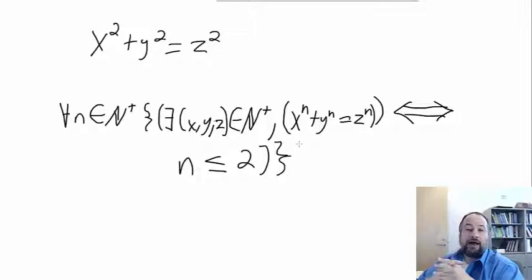So for any n in the positive natural numbers, one or above, there exists an x, y, and z within the positive natural numbers, such that x to the n plus y to the n equals z to the n. If that is true, then n is less than or equal to two.